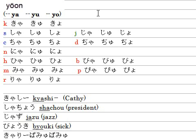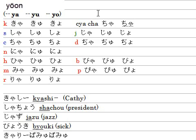The same applies for cha, chu, cho. You can type C-Y-A for cha, but you can also type C-H-A for cha. Let me show you both — C-Y-A gives cha, and C-H-A also gives cha. The same manner applies for chu and cho as well.